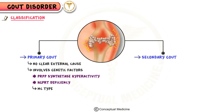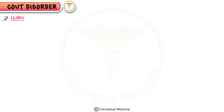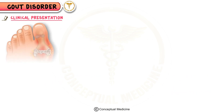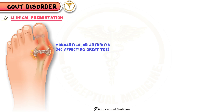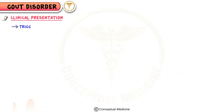Secondary gout results from conditions like leukemia, myeloproliferative disorders, and kidney disease, or from lifestyle factors like alcoholism and certain drugs. Clinically, gout presents as monoarticular arthritis commonly affecting the great toe, preceded by years of hyperuricemia. Triggers include large meals and alcohol or sudden urate changes.